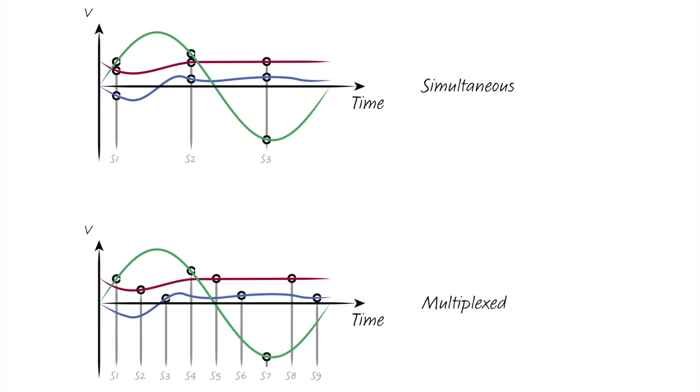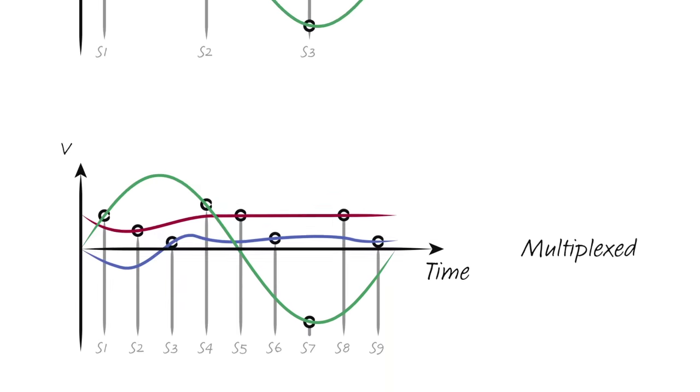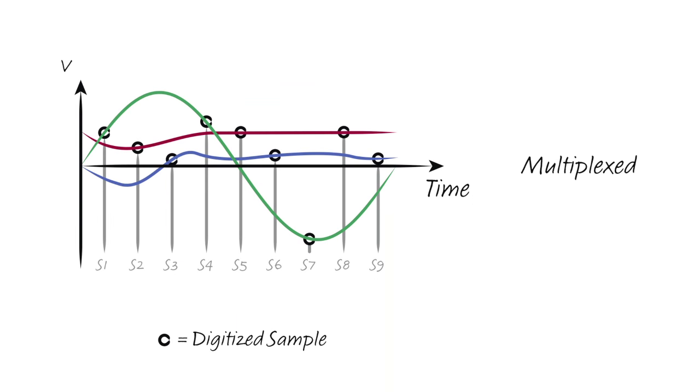Comparing the two cases, the simultaneous converter samples and digitizes all three signals at each sampling moment, while the multiplex converter can only sample and digitize one signal at a time.